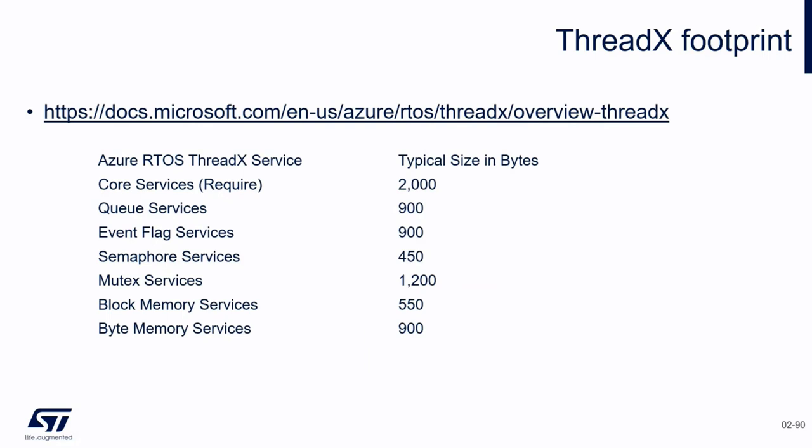Let's look at the ThreadX footprint in bytes for the core services — the queue, events, semaphore, mutex, block memory service, and byte memory service. This gives an overview of the memory footprint for each ThreadX component we have discussed.